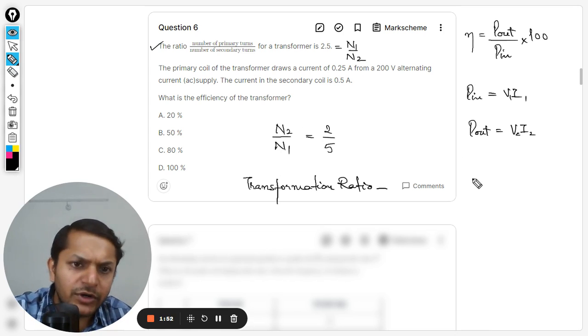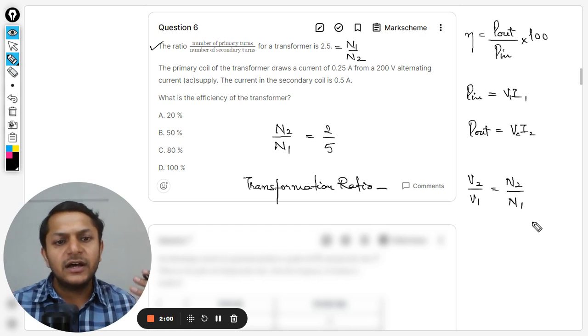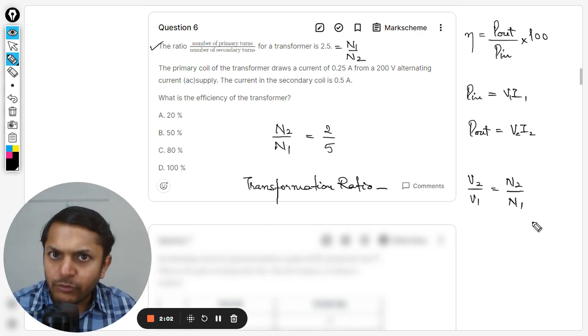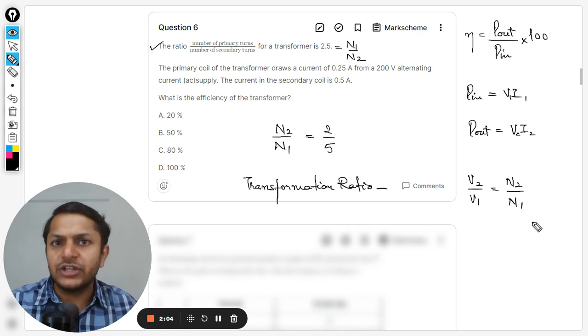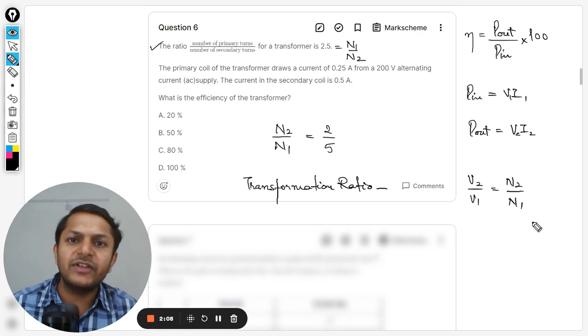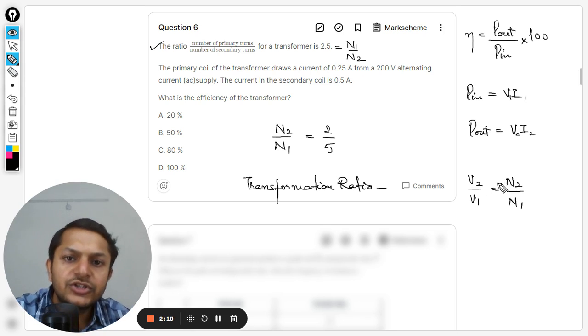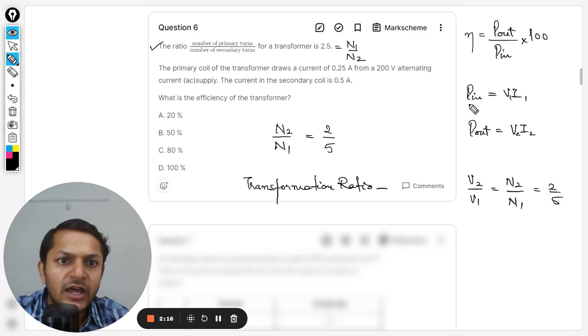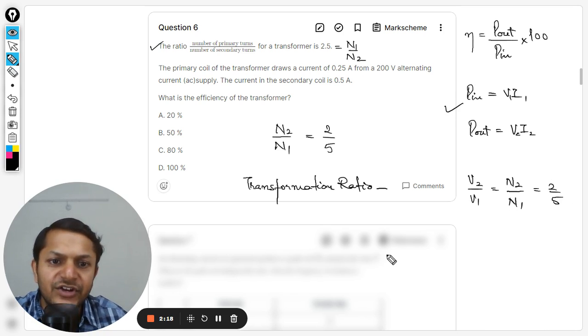In transformer, v2 divided by v1 is equal to n2 divided by n1. This is the formula for the transformer, where v2 is the voltage or the emf that you are getting on the secondary coil and v1 is the emf that you are having on the primary coil. So even this will be equal to 2 by 5. So v2 by v1 ratio is known, that is 2 by 5.